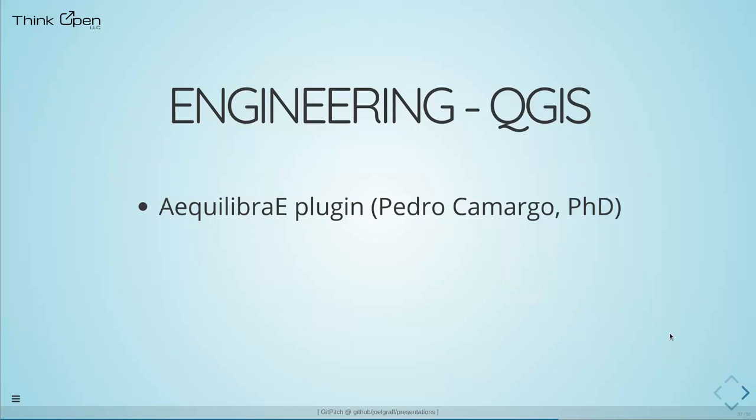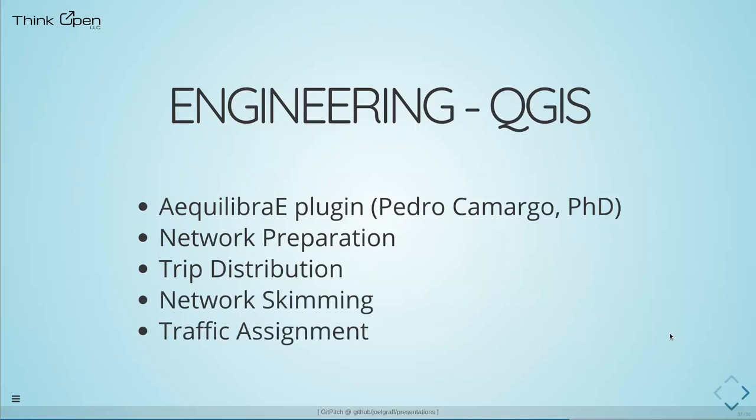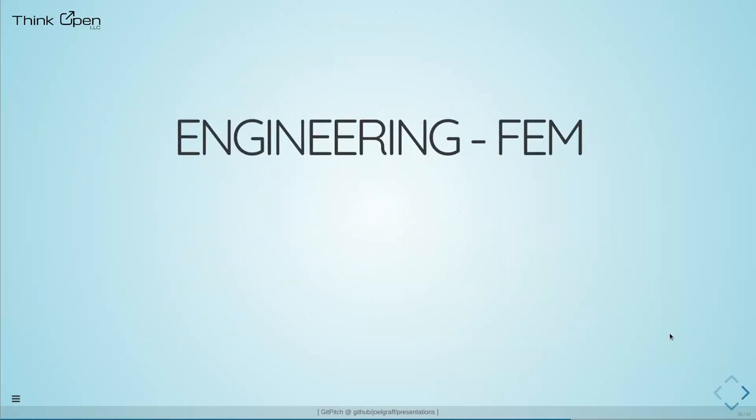Pedro Camargo observed there was no open source alternative for trip generation — if you want to do that professionally you'd have to spend $20,000 for the commercial option. So he developed the Equilibrium plugin for QGIS to solve that problem. Equilibrium does network preparation, trip distribution, network skimming, and traffic assignment. It's fairly actively developed — he appears to be the primary developer, but I see a good number of updates from him.